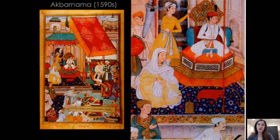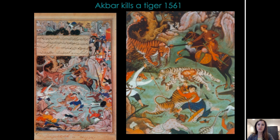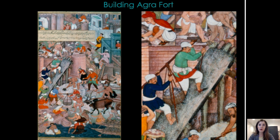Other images of Akbar include the young Akbar taking his throne — you can see him on a multi-sided elevated platform with individuals coming to pay their respects. You can also see Akbar calmly killing a tiger, always very calm and controlled. There was also an important fort in the city of Agra, and we see the building of that particular fort, which will become important for Shah Jahan and the Taj Mahal.